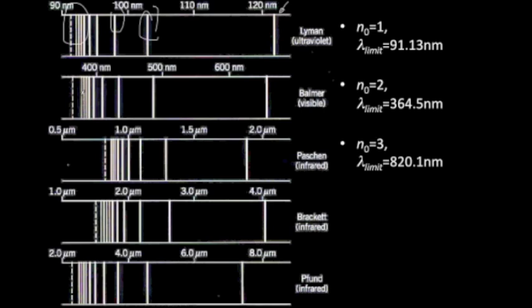Eventually, there's a sequence found for n0 is 3. This is referred to as the Paschen series after its discoverer. And it's all in the infrared. The limiting or asymptotic value of wavelength is 820.1 nanometers. That's above the red, but it extends all the way up as high as nearly 2 microns, or 2,000 nanometers.